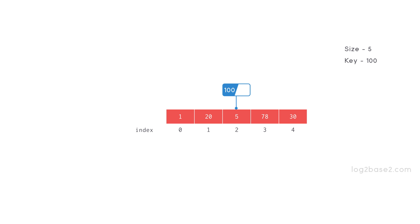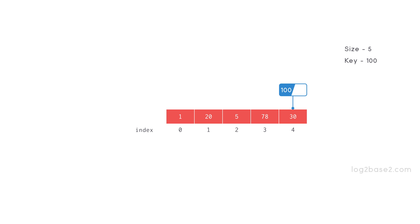So we move to the right. Take 5 and compare with 100 — again it is not the same value. So we move to the right and take 78 and compare with 100 — again not the same. So we move to the right and compare 30 with 100. Still it is not the same value, and there are no more elements in the array. The array is completely visited and 100 was not found.